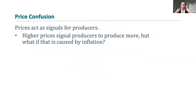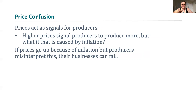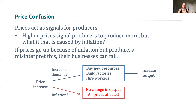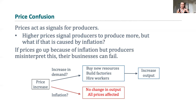The next cost is called price confusion. Prices act as a signal in the market of value for producers. The law of supply tells us that at higher prices, producers are signaled to produce more. But if higher prices are caused by inflation, producers might misinterpret this and expand their business faster than is sustainable. If a price increase is the result of an increase in demand, the correct response is to buy new resources, build new factories, and hire more workers — expand output. But if the price increase is just the result of inflation, you shouldn't be changing your output because all prices across the board are affected. Accidentally reading this as a signal to increase output could put you into a poor business management situation.